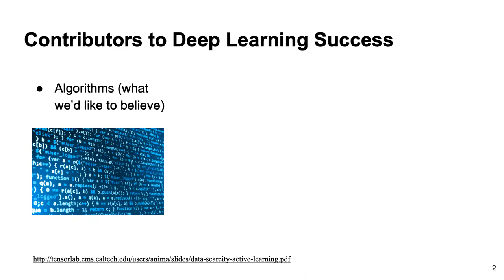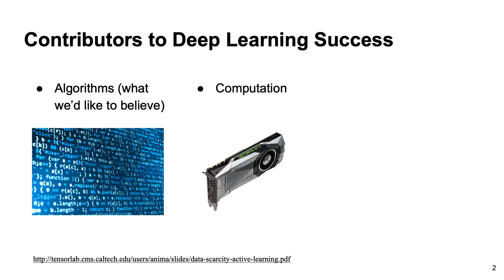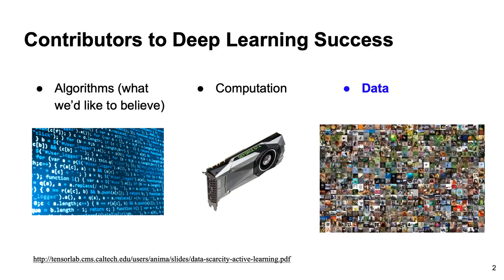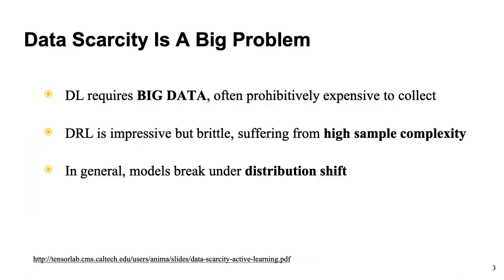We all know that deep learning has achieved incredible progress everywhere. What are the contributors to the success of deep learning? First, algorithms — elegant algorithms that can work well for tasks. Large-scale computation power also contributes a lot. But most importantly, data is really the key. Big data enables the study of deep learning. However, data scarcity is a really big problem, because deep learning usually requires big data that is often prohibitively expensive to collect. Deep reinforcement learning is impressive but brittle, suffering from high sample complexity, and in general models break under distribution shift.